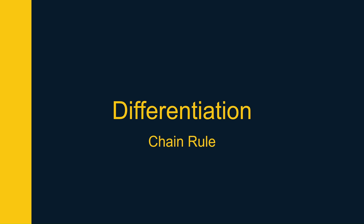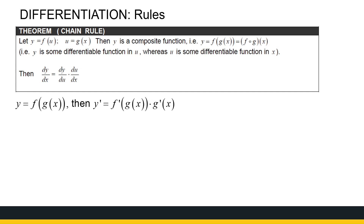Once you are familiar with the product and quotient rule, we can look at what is called the chain rule. When looking at functions, one operation you can do is taking the composition of two functions — one function of another function. The chain rule tells us how to differentiate the composition of two functions, giving us the derivative of f of g of x.